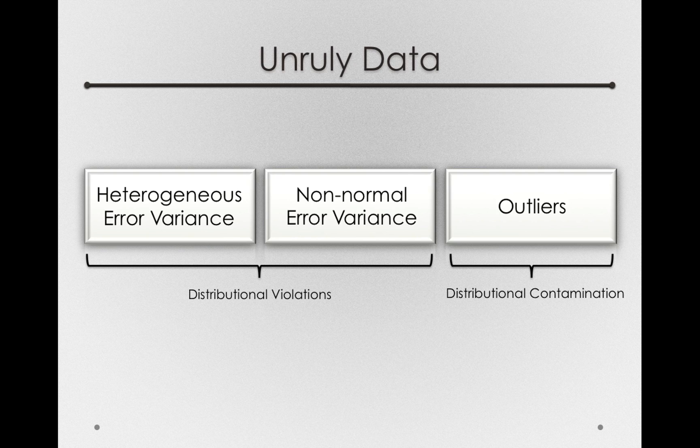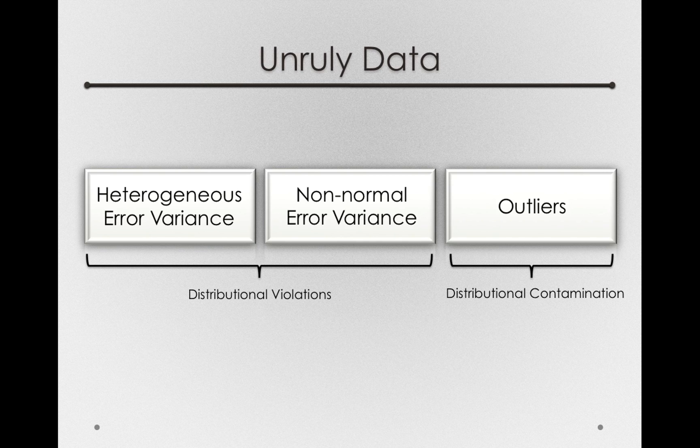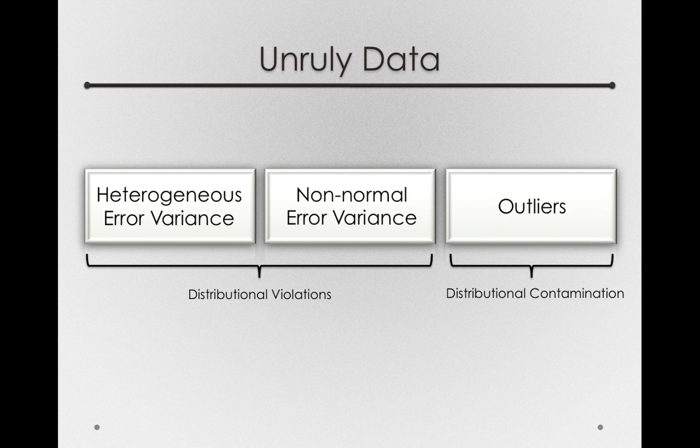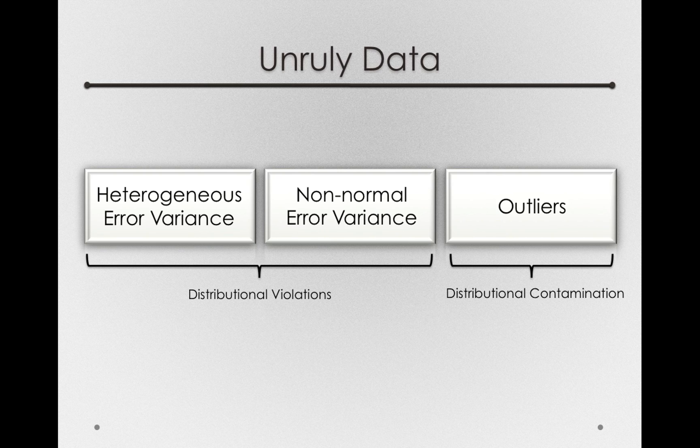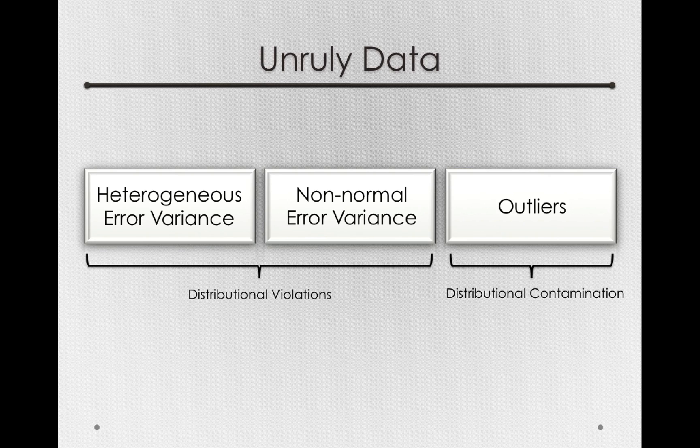Outliers represent some other process or some types of errors that have leaked into our data. What's problematic about outliers is we don't know ahead of time what type of influence they'll have in our data. Sometimes they'll have an effect on our power. They'll actually be outliers in places that will switch effects. So outliers and ridding our distributions of contamination will be a considerably important thing to do, and the reason why we always screen our data before we run our analyses.